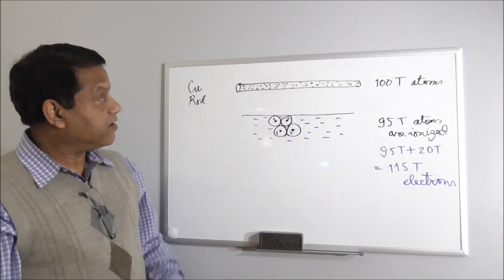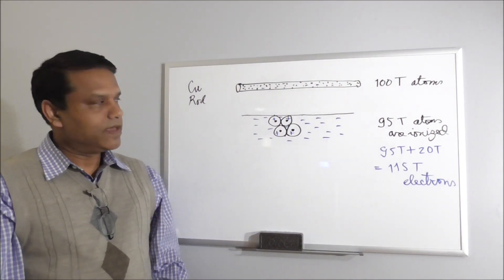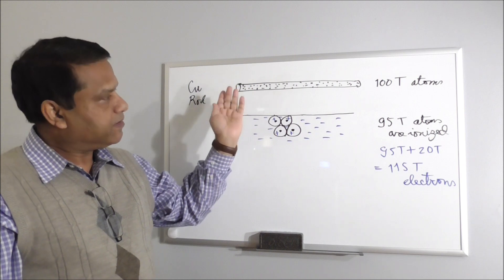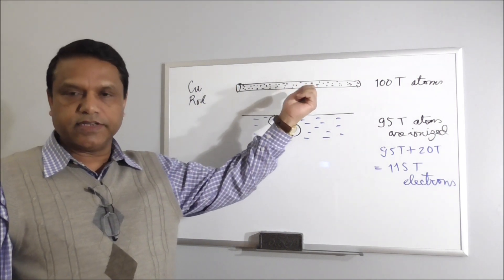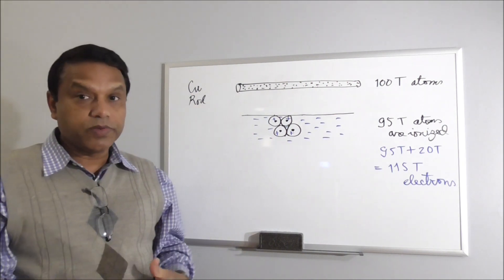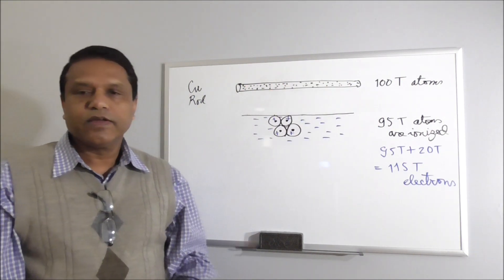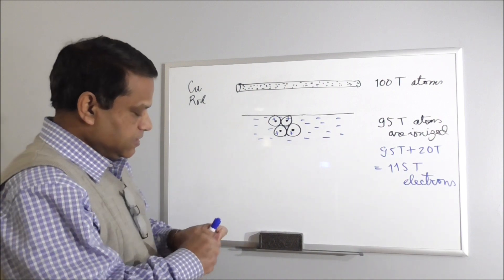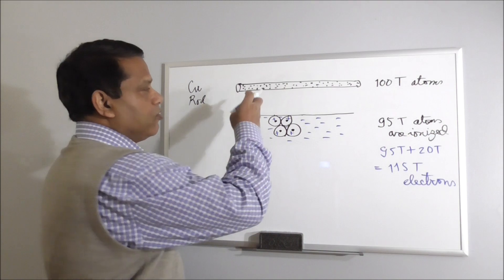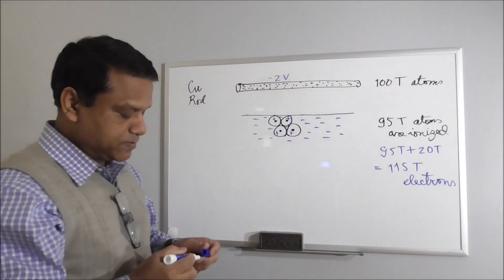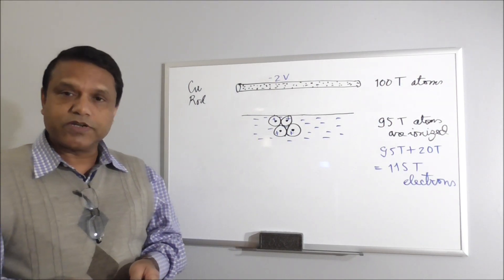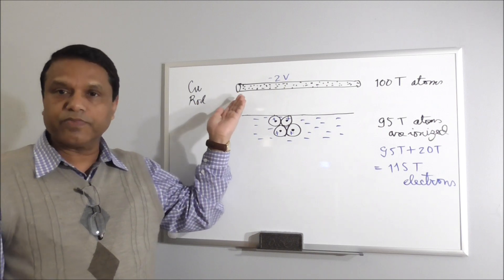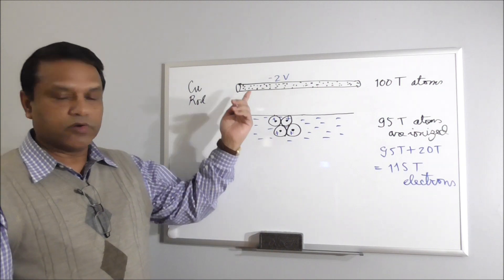Will the voltage be different at different places of the copper rod? No, because copper is a very good conductor. If there are more electrons in certain places and less in others, electrons will be transported from regions of higher density to regions of lower density and redistributed. As a result, everywhere in the copper rod will have the same negative voltage. Let's assume that voltage is minus 2 volts. So by addition of electrons, the voltage of this copper rod is minus 2 volts. Yes, it is possible to have negative voltage — as we see in this example.